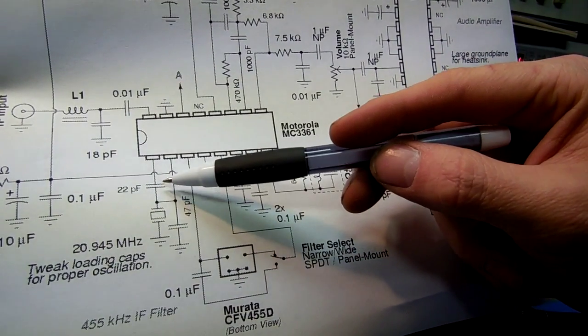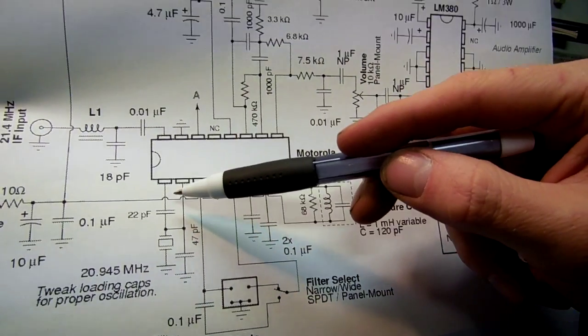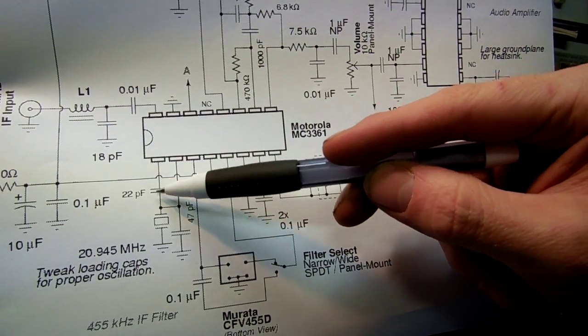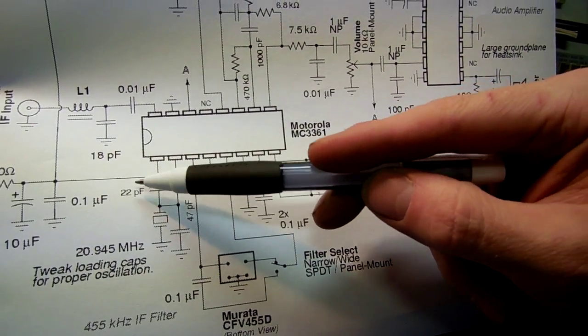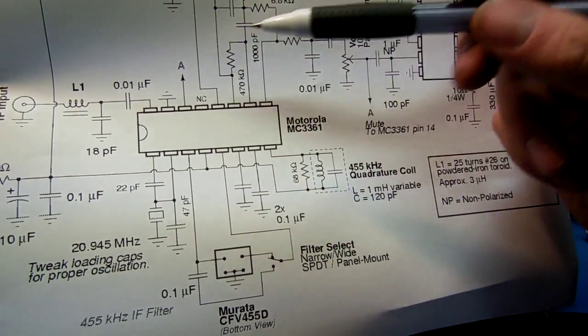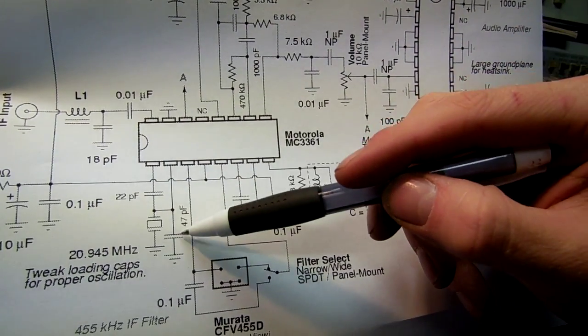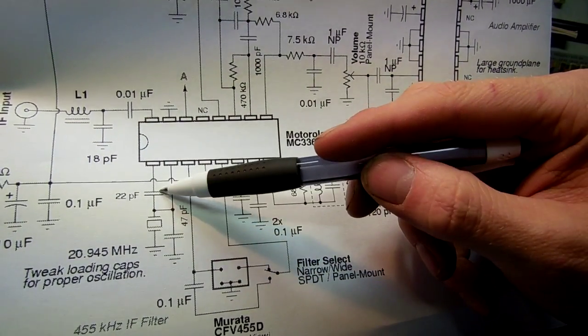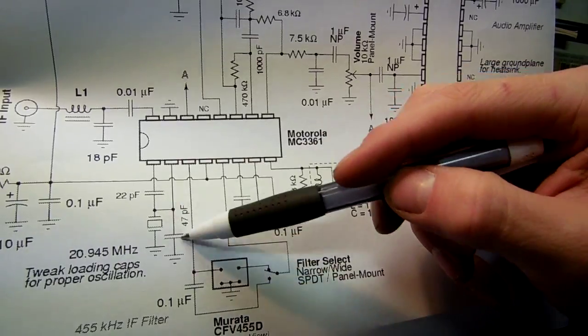You're going to want to keep the supporting loading capacitors for that particular crystal though. The one I'm using had 22 picofarads and 47 picofarads. You may have to experiment a bit with these value capacitors if it doesn't oscillate.